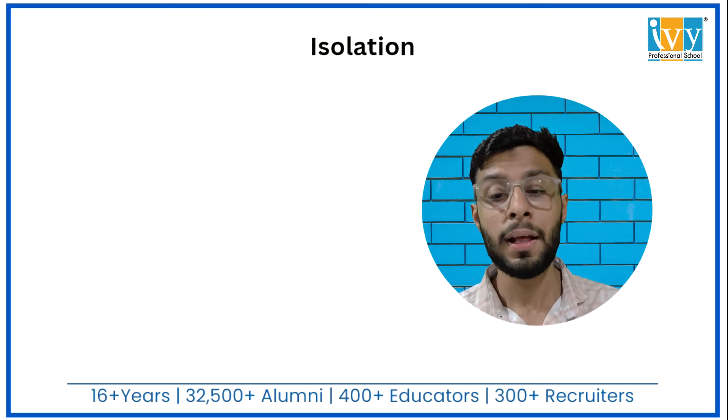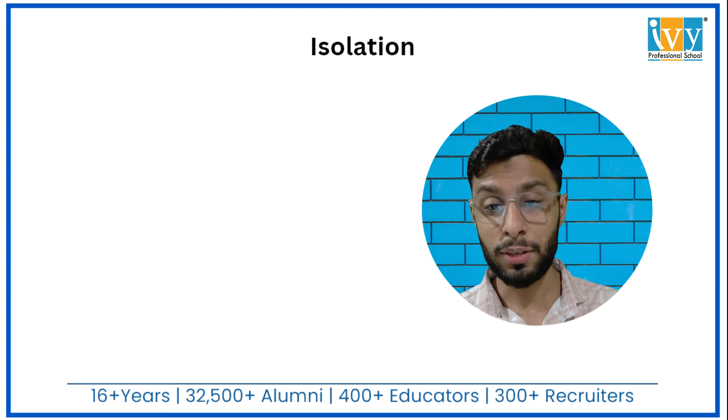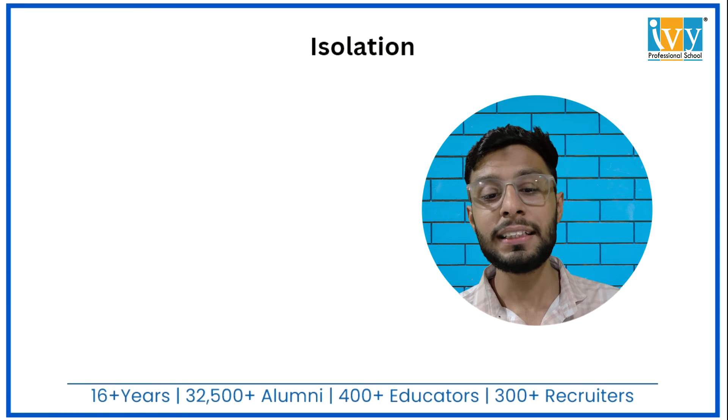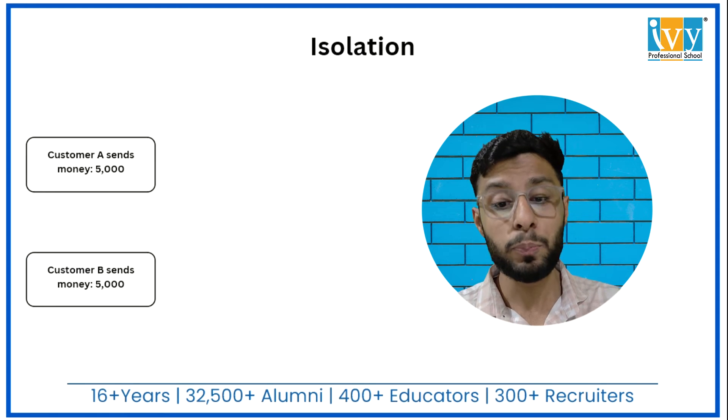Now let's talk about what is Isolation. Isolation ensures that two transactions do not interfere with each other. When two or more transactions run concurrently, each transaction executes as if it is the only transaction in the system.